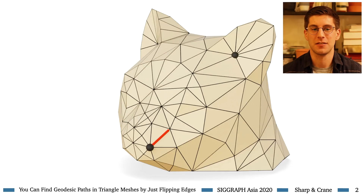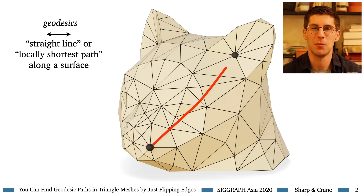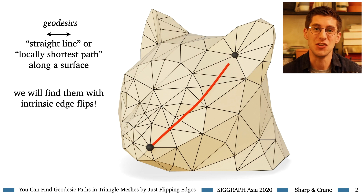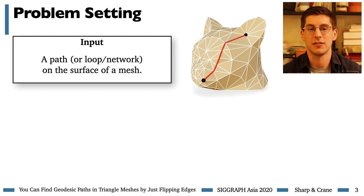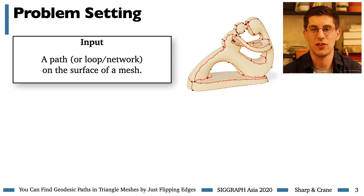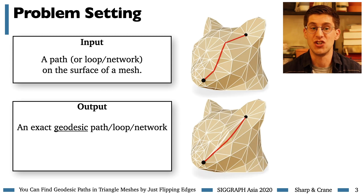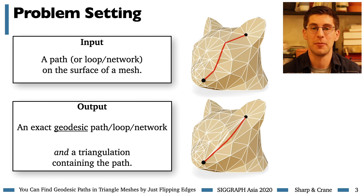Geodesics are paths along a surface which are straightest or locally shortest curves across a shape. These paths are widely useful for modeling, mesh generation, analysis, and more. In this work, we discovered that a simple edge-flipping strategy can be used to compute these geodesic paths. The input is some path along the surface of a mesh which you wish to straighten, or more generally a loop or curve network. The output is a geodesic path, which intuitively corresponds to pulling the curve tight. Our algorithm also generates an intrinsic triangulation containing that path, which is useful for many tasks in geometry processing.